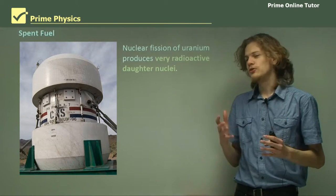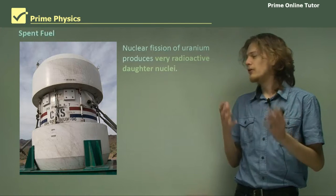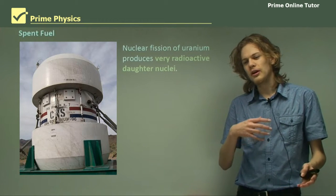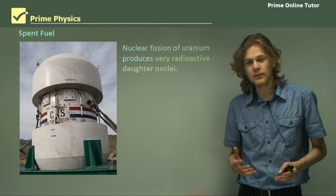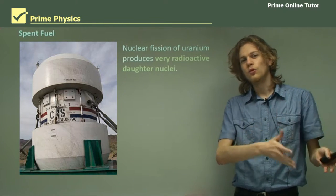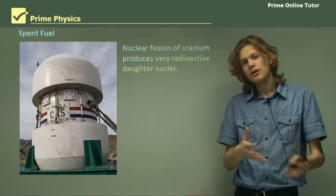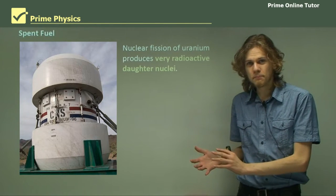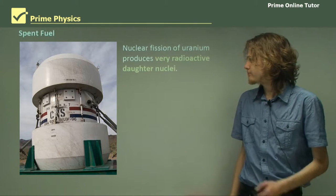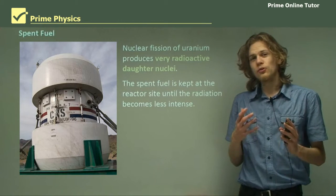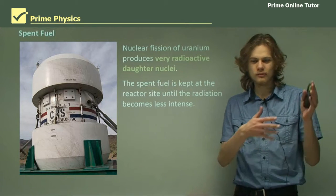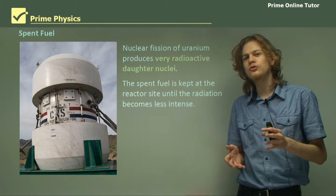Nuclear fission of uranium produces very radioactive daughter nuclei. We know from the theory of radioactive decay that once you get fission, or in fact just a decay, you'll end up with a new atom. That new atom tends to be quite radioactive and unstable. So the spent fuel is kept on the site of the nuclear reactor for a while, just until it cools down a bit and loses some of its radiation.